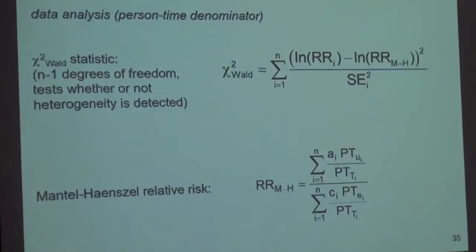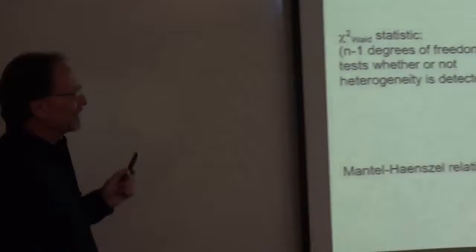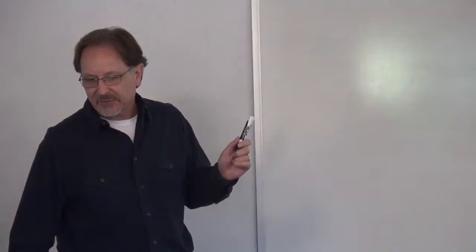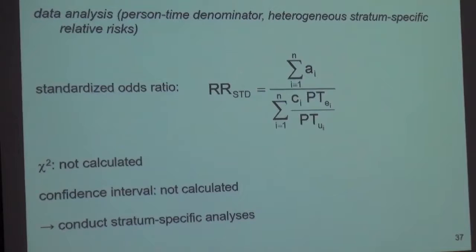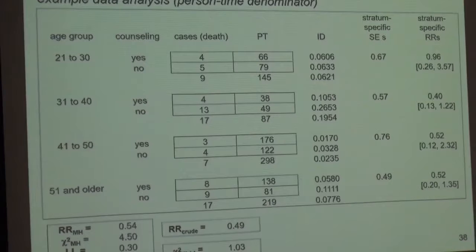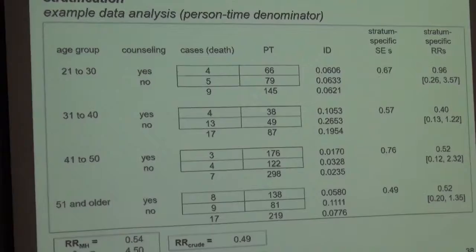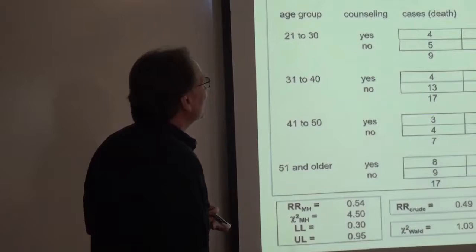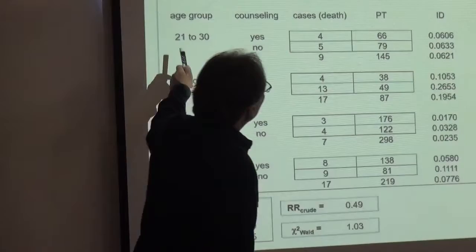Again, this is the chi-square wall. There are slightly different formulas because now we're talking about incidence densities, but it's the same idea — we have the chi-square wall, the Mantel-Haenszel chi-squared, the confidence interval, and then we have a standardized in case we experience homogeneous or non-homogeneous data. Let's say that we stratify those data by age group, because we think there might be an effect associated with age group and seeking counseling and whether or not there's a protective effect.